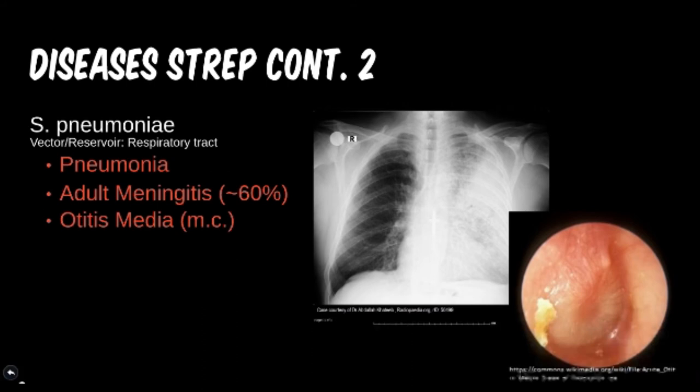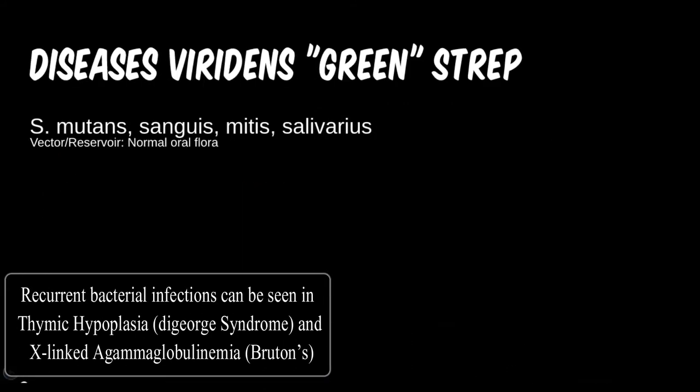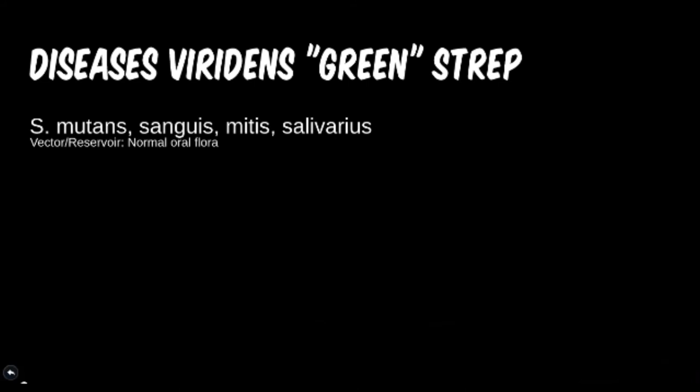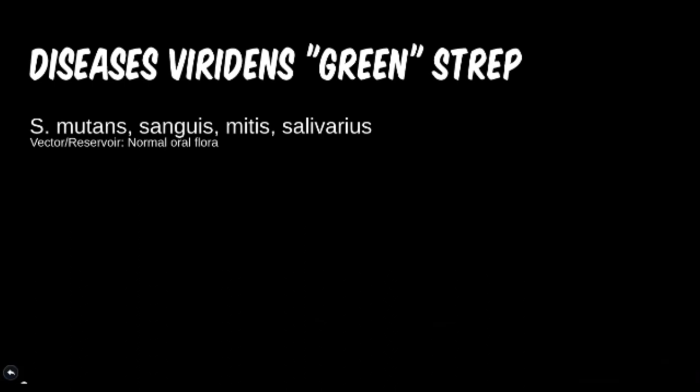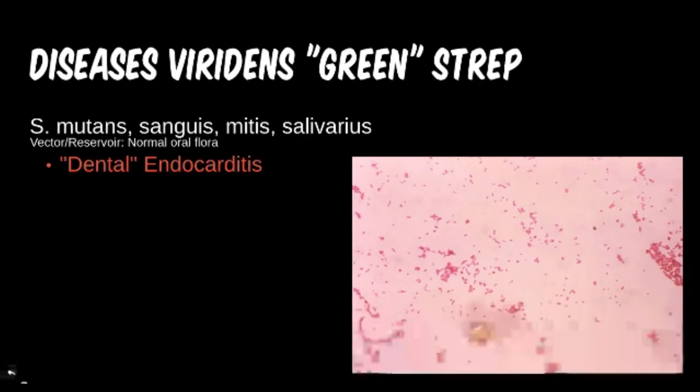Viridans strep is a group of streptococcus that doesn't really fit in with the others. It is normally found in the human mouth along with many other types of bacteria. The human bite is actually much more dangerous than most animal bites, including dogs and cats. After dental procedures, as you probably notice from flossing, you might end up with bleeding gums. These open wounds allow for hematogenous spread of bacteria already in your mouth to other parts of the body. This is another pathway in which bacteria may latch onto the heart tissue, causing endocarditis.